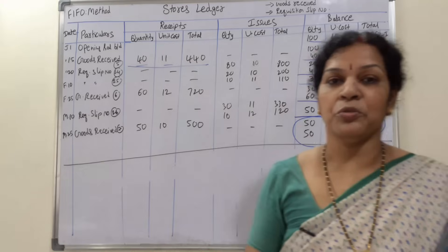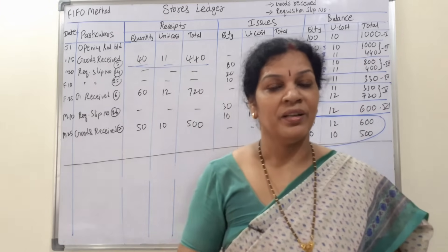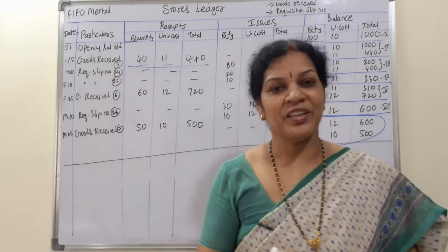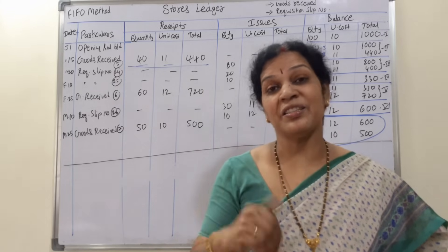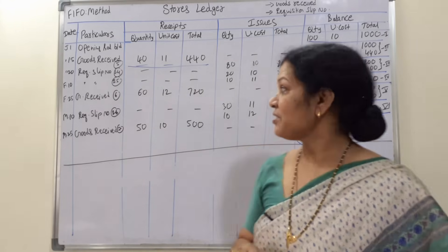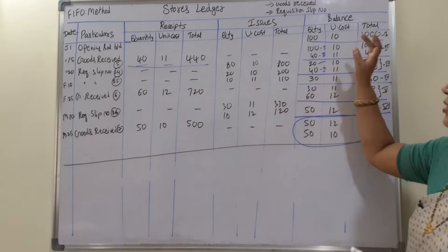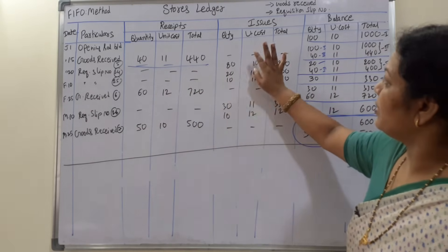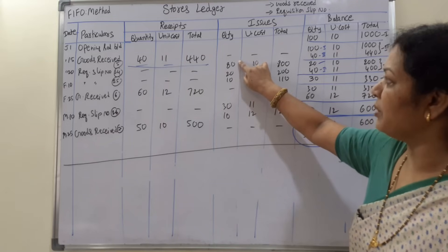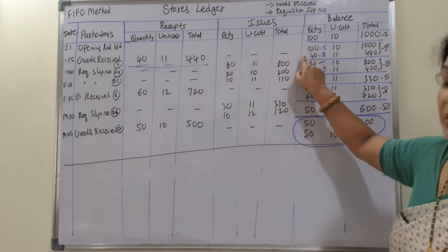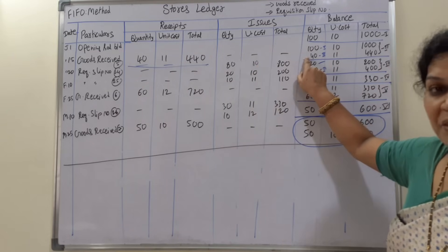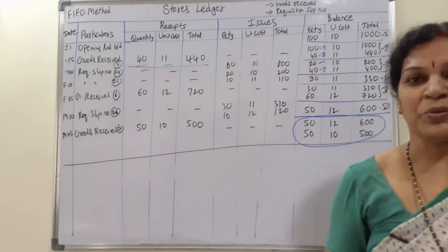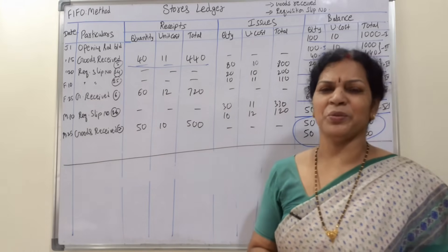This is how we issue material as per the FIFO method — First In First Out. In the next class we will see the LIFO method — Last In First Out. In LIFO, if we have to issue 100 units, we issue from the last received batch first and touch the earlier stock later. It is a simple concept, nothing to worry about.